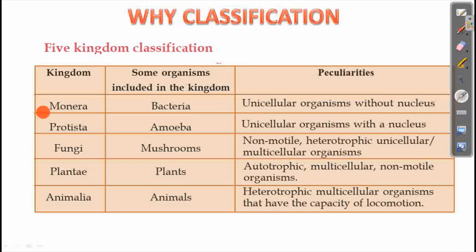In the first kingdom, it is Kingdom Monera. Kingdom Monera includes bacteria. The peculiarities are that they are unicellular organisms without a nucleus — these are what we call prokaryotes, as opposed to eukaryotes.